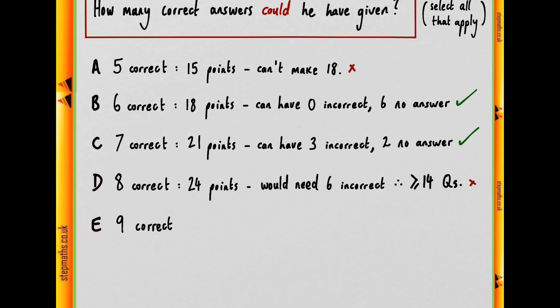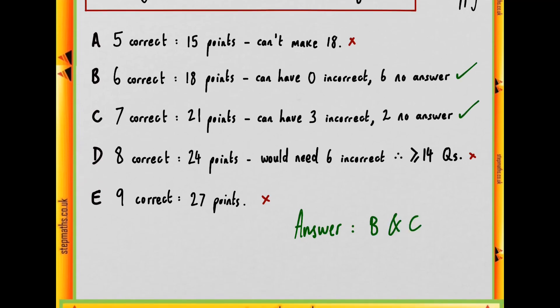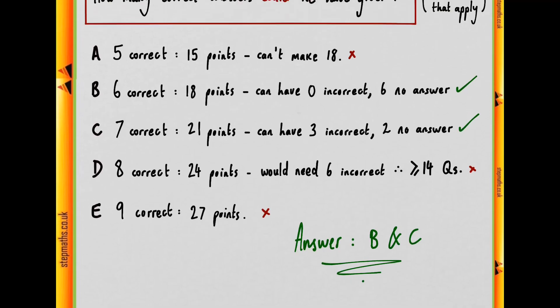Finally, we have E, which for a similar reason would multiply to 27 points, and there's no way you can get down to 18 without needing many more questions than 12. So E is not viable for the same reason as D. And that tells us that our answer is that B and C are the only two that we can select as being viable.